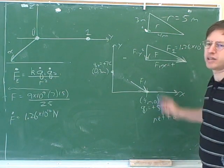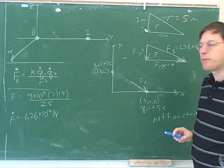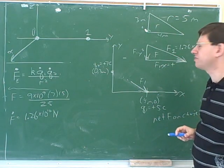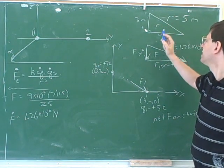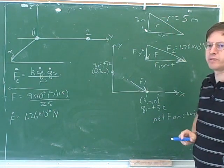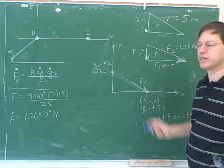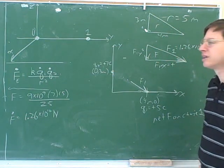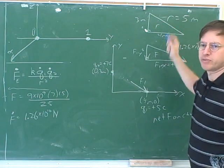The way we learned to break vectors into components last semester used an angle and trigonometry. But we have a problem here because we don't know either of these two angles. However, we have the distance triangle, and it might be apparent that these are similar triangles — the distance triangle and the force triangle are similar. All their corresponding angles are the same because they're both based on the same picture. Since we know all three sides of the distance triangle, we can use trig to find one of those angles.